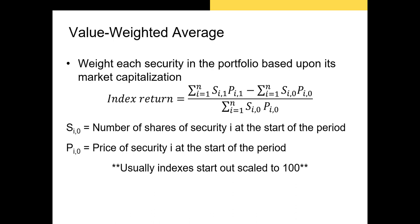Now let's talk about value-weighted indexes. Value-weighted indexes weight the assets in them by their market capitalization. This means that stocks of large firms like Apple and Amazon are more heavily weighted and their returns have greater impact on the return of the index as a whole. The starting value of a value-weighted index is 100, and the actual value of the index is relatively meaningless by itself — what we care about is how the value changes, i.e., the returns.